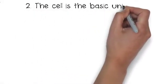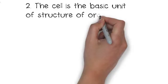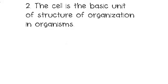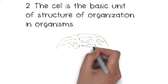Number two. The cell is the basic unit of structure of organization in organisms. It also is where all the life processes happen.